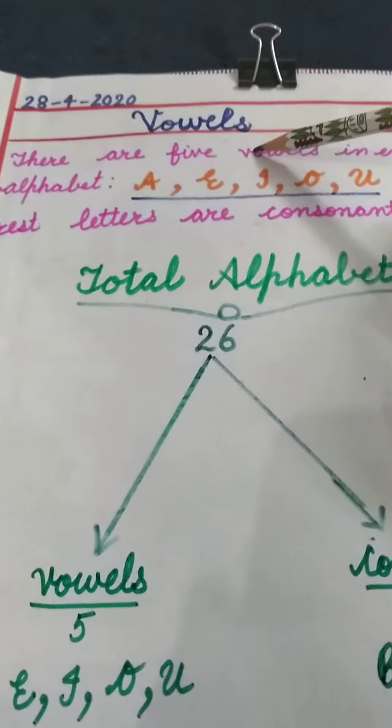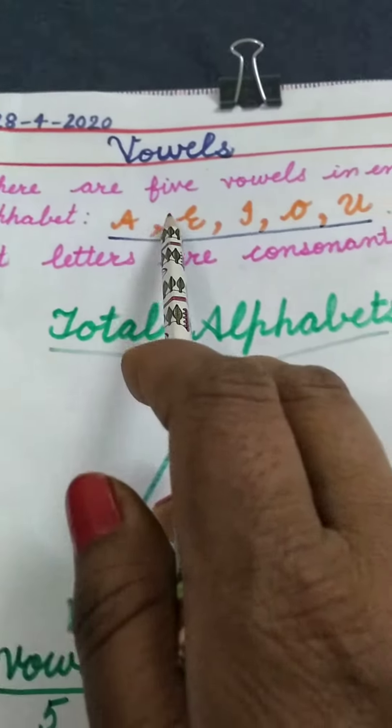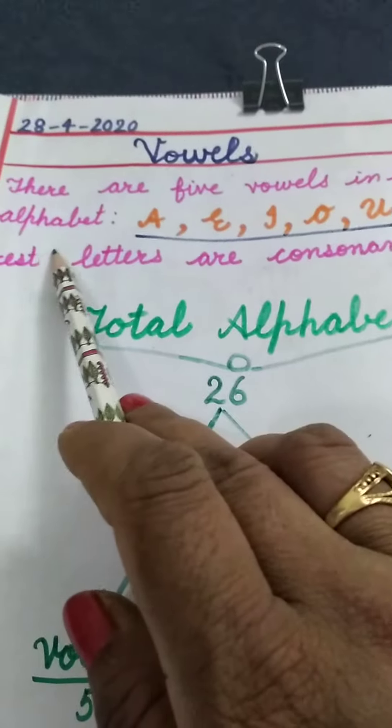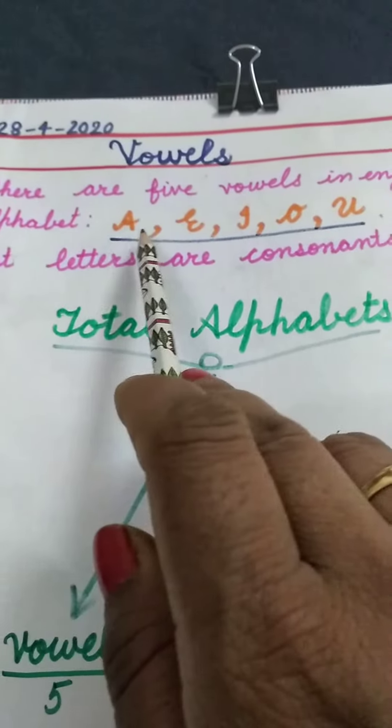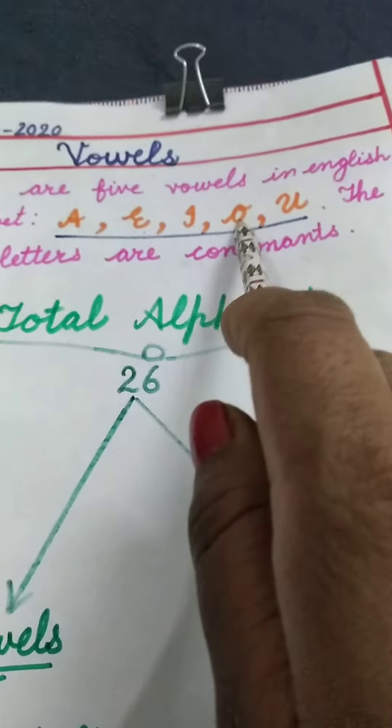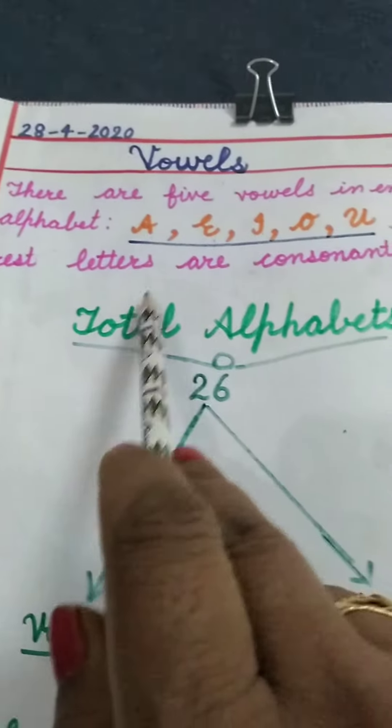There are five vowels in the English alphabet: A, E, I, O, U. The rest of the letters are consonants.